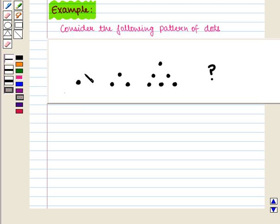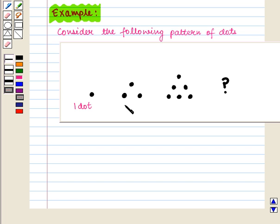Now if we look at the first figure, there is one dot. In the second figure, a triangle is formed by adding two dots below one dot. So total number of dots here are one plus two which is equal to three.